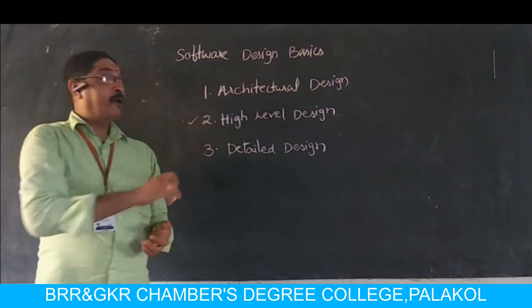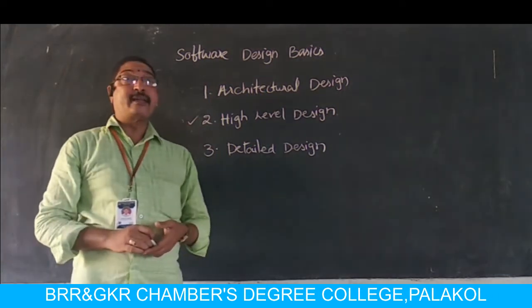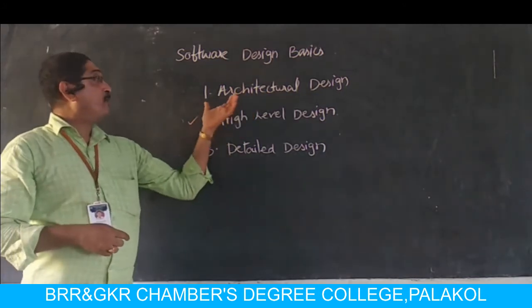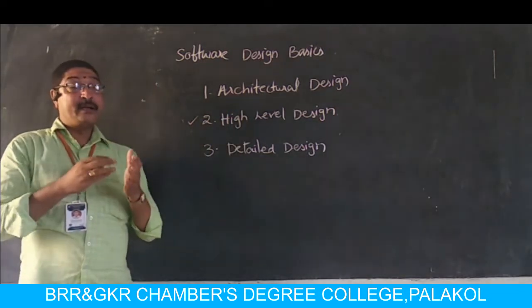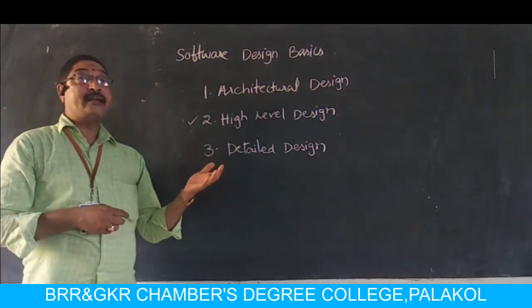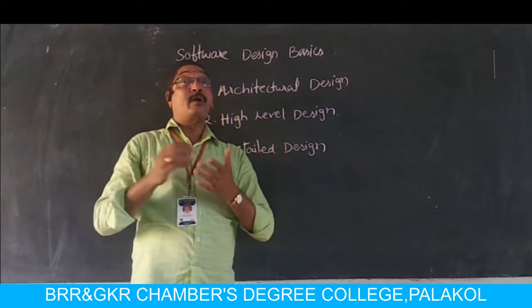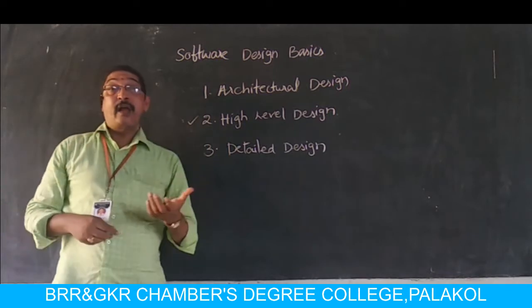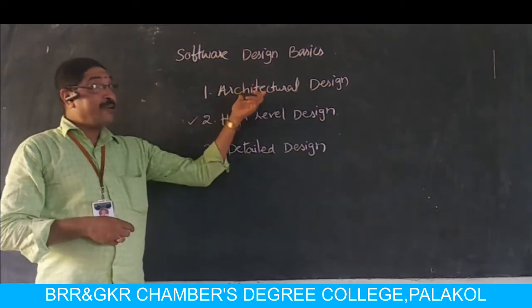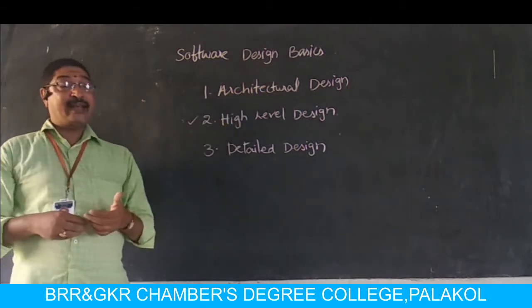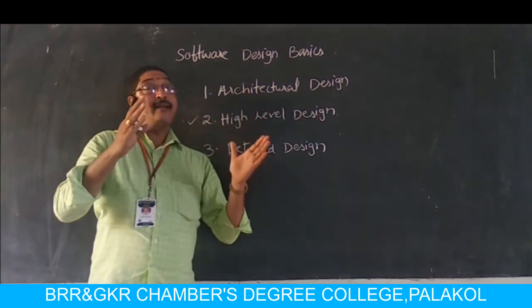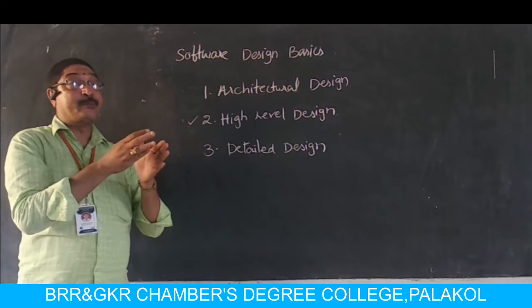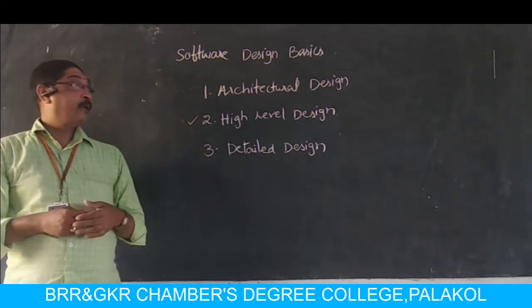The second is high-level design. In the architectural model, the system is broken into a single entity with multiple components. In high-level design, that single entity system will be divided into a number of modules. It represents a less abstract view of subsystems and models, dividing the system further into its constituent modules.